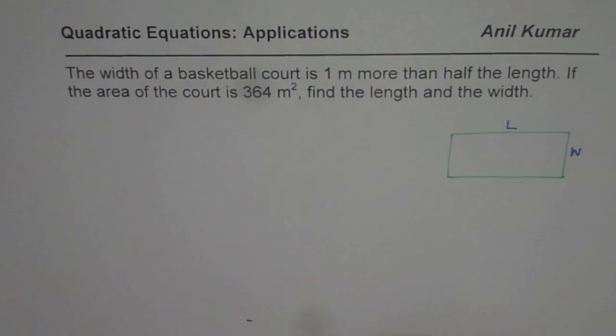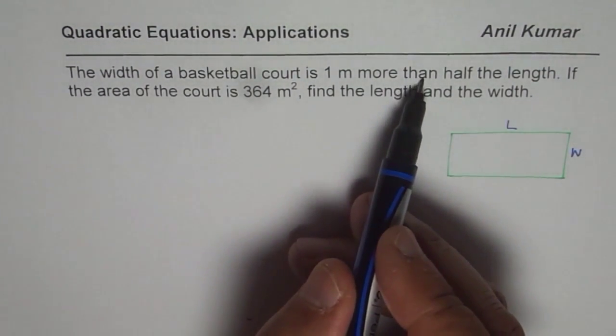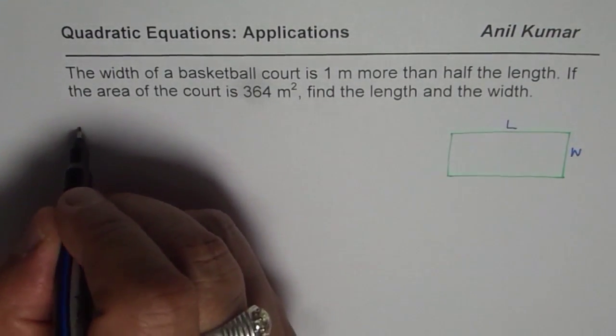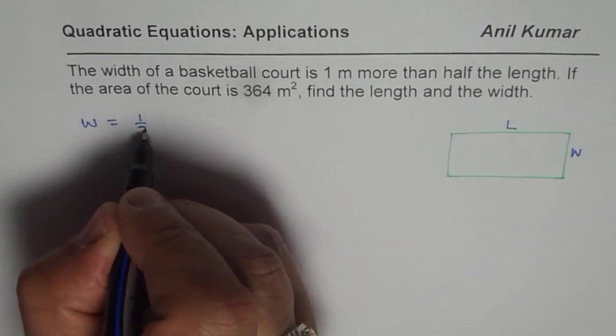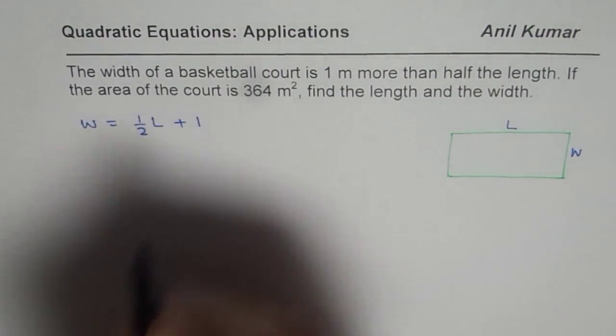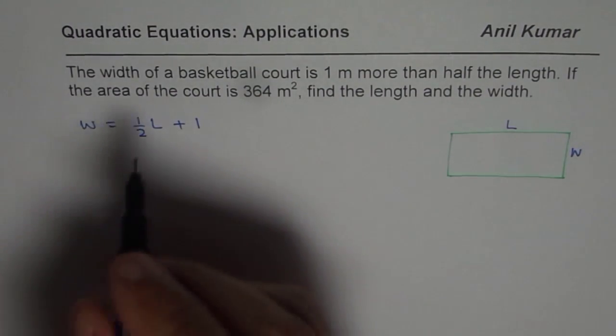Now let us see how they are related. The width of a basketball court is 1 meter more than half the length. So width is equal to 1 meter more than half the length. So half the length plus 1. That is how width and length are related.